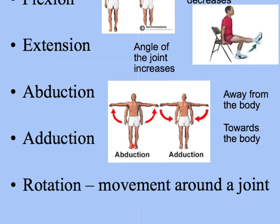Adduction is the opposite — you are bringing the limb back to the center line. If you think 'add,' you are adding to the center line of the human body. Finally, rotation is just movement around a joint. Rotation gives us our largest range of movement, which is why it occurs at ball and socket joints. We'll look at sporting examples for all these movements shortly.